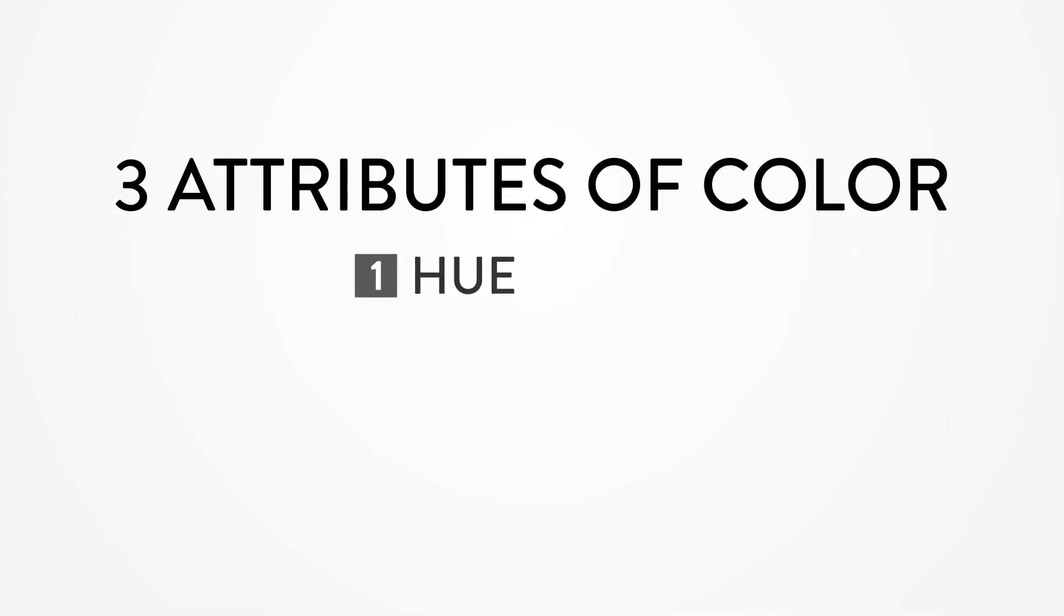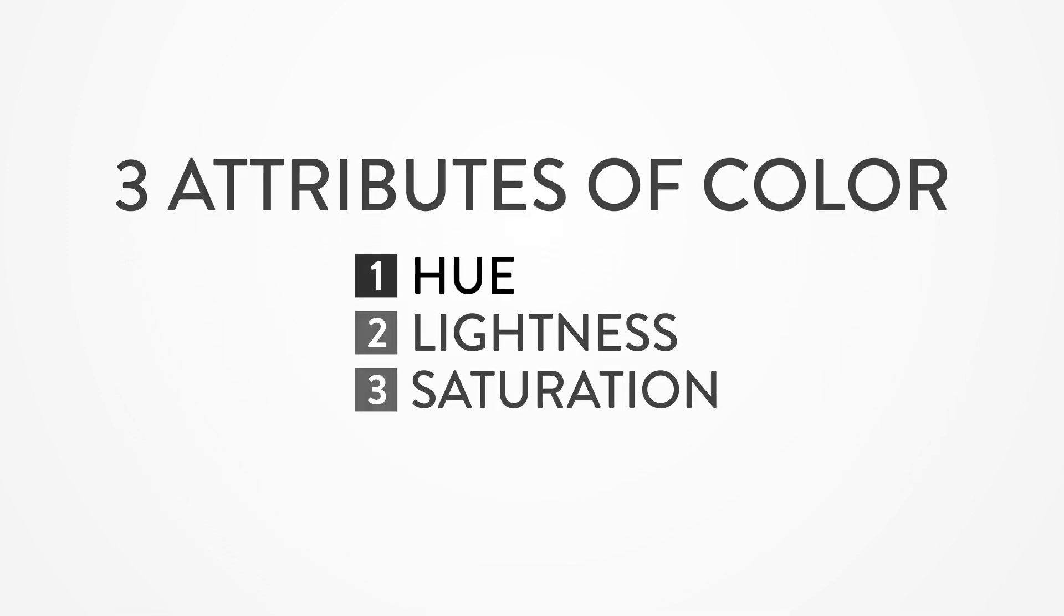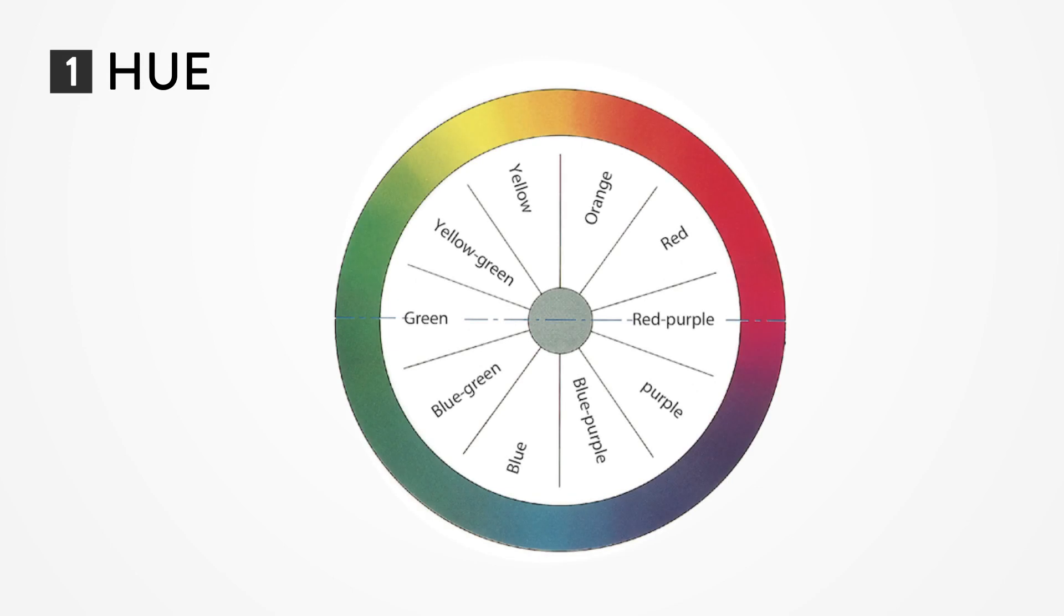we must first understand the three attributes of color. They are hue, lightness, and saturation. Hue is a term that we commonly use to describe color like red, green, and blue.